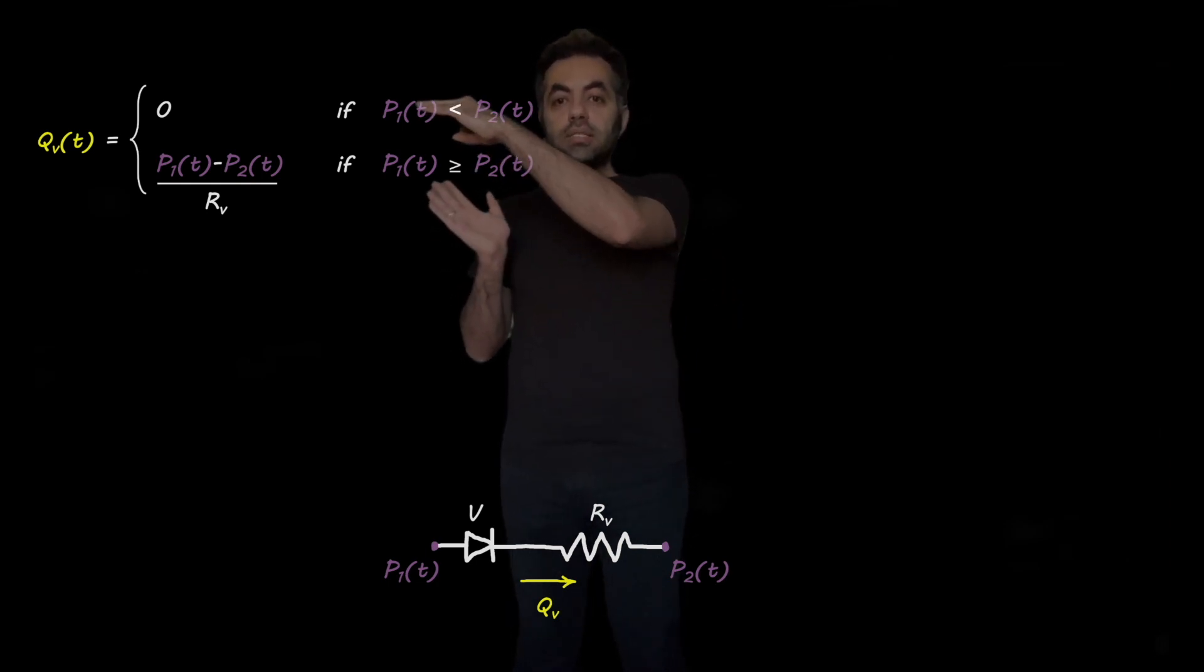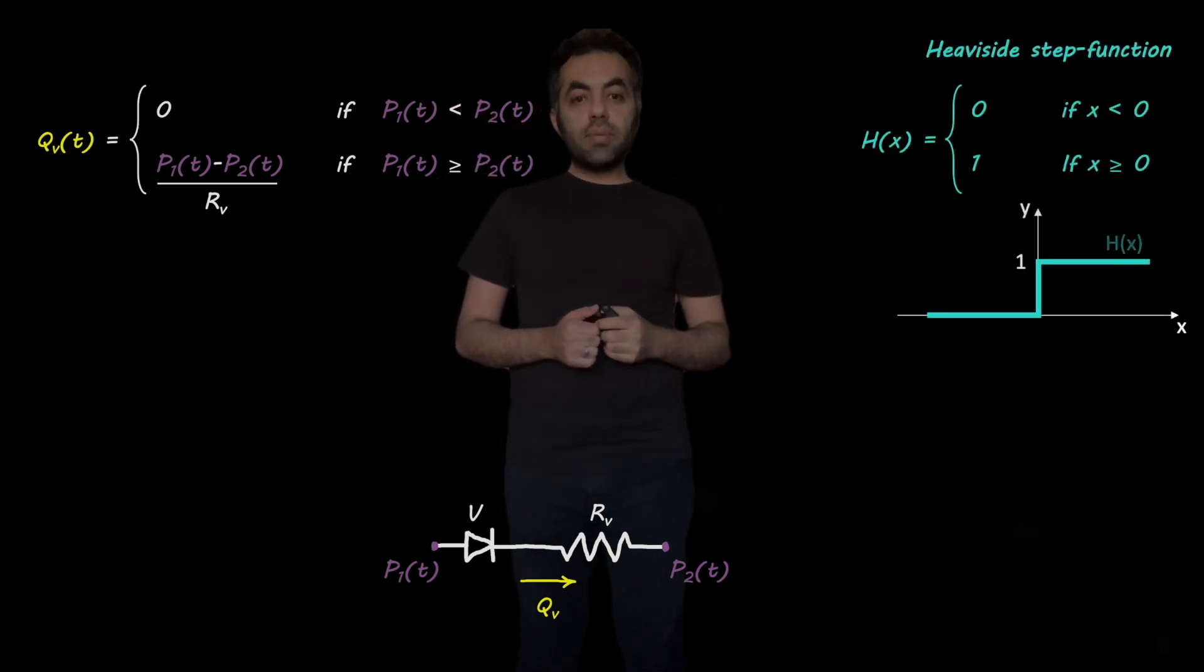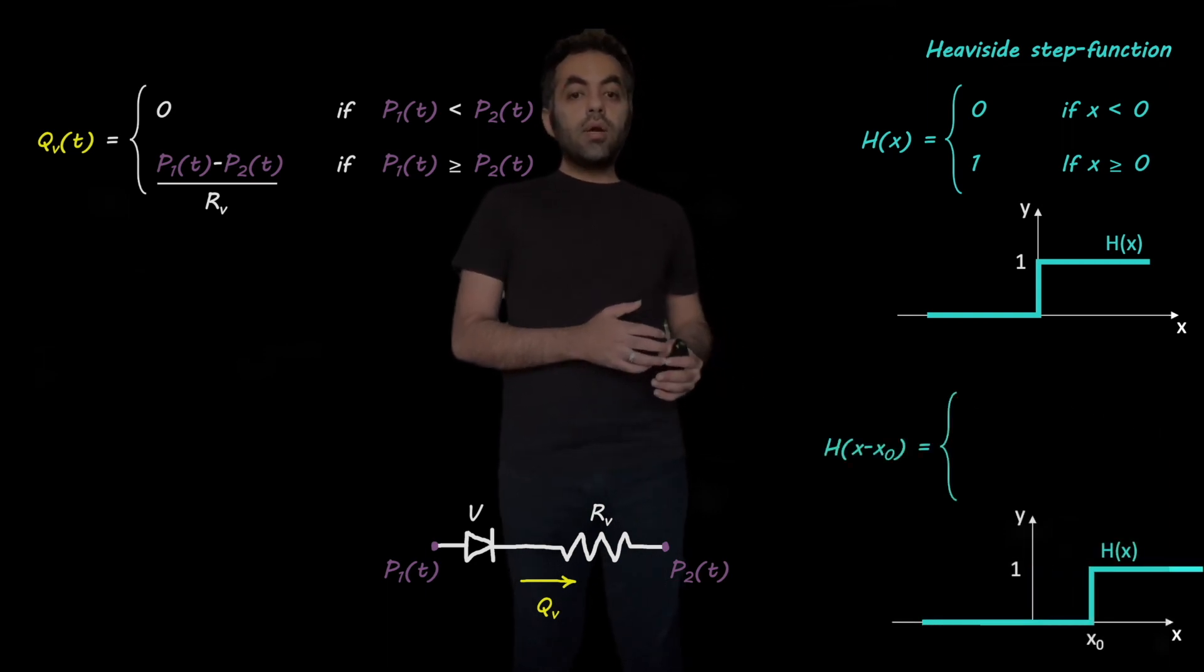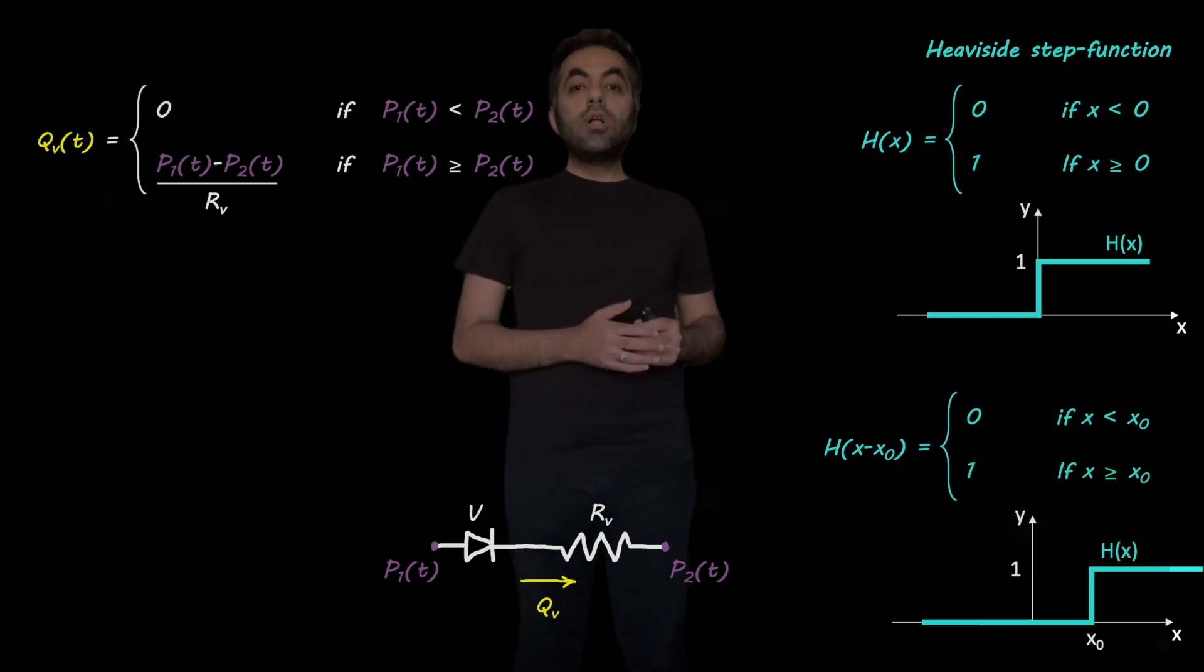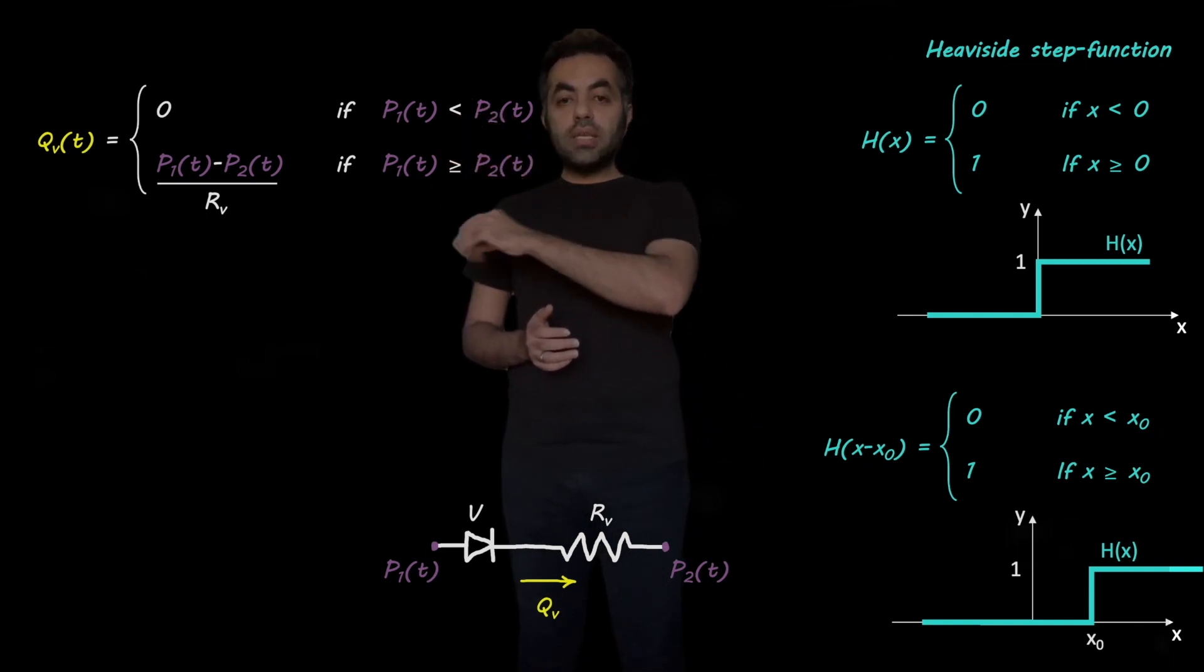We can write these two equations in one single equation using the Heaviside step function. We know that in the Heaviside step function, whenever x is negative, the function has a value of zero. And when x is positive, then the step function has a value of one. Also, this step function can be shifted to x zero. And then we can write this step function as this form here. So let's use the Heaviside step function in order to simplify these equations here.